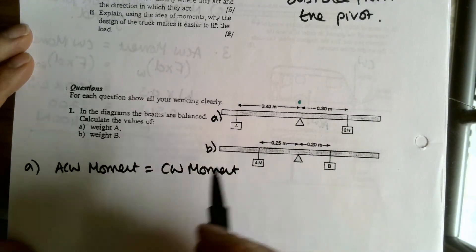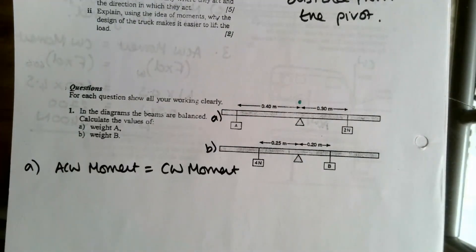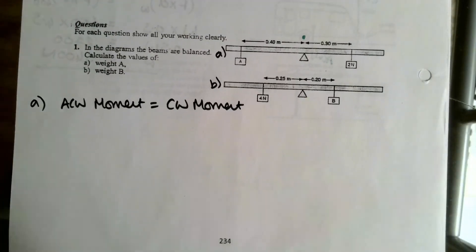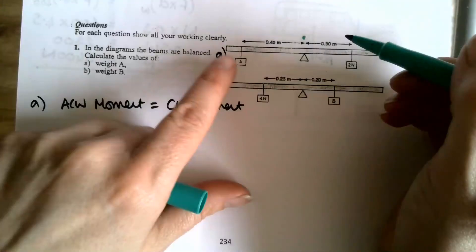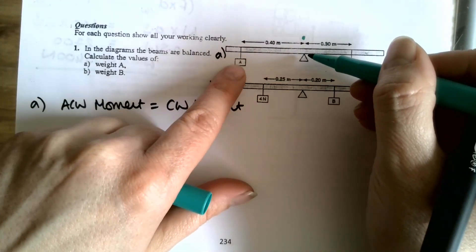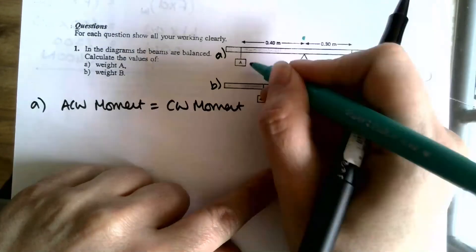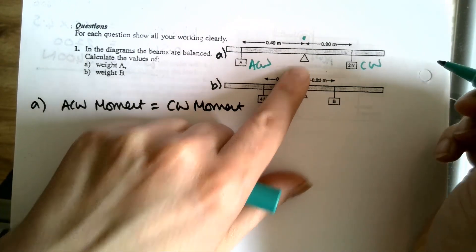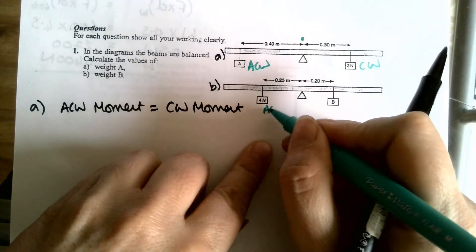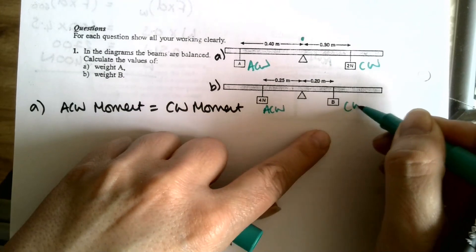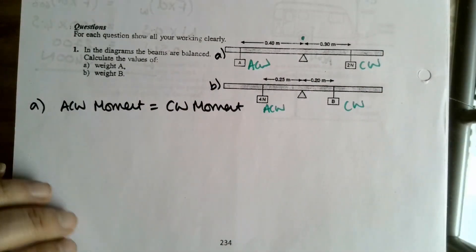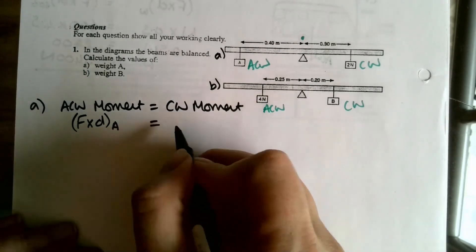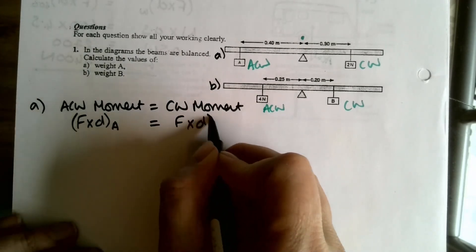So here's my pivot. Let's get this a little bit down. Okay, so A, if this is my pivot here, A is going to be making this turn anti-clockwise, and this one, the 2 newtons, is going to be making that turn clockwise. I'll do this one while I'm here: this one anti-clockwise, this one clockwise.